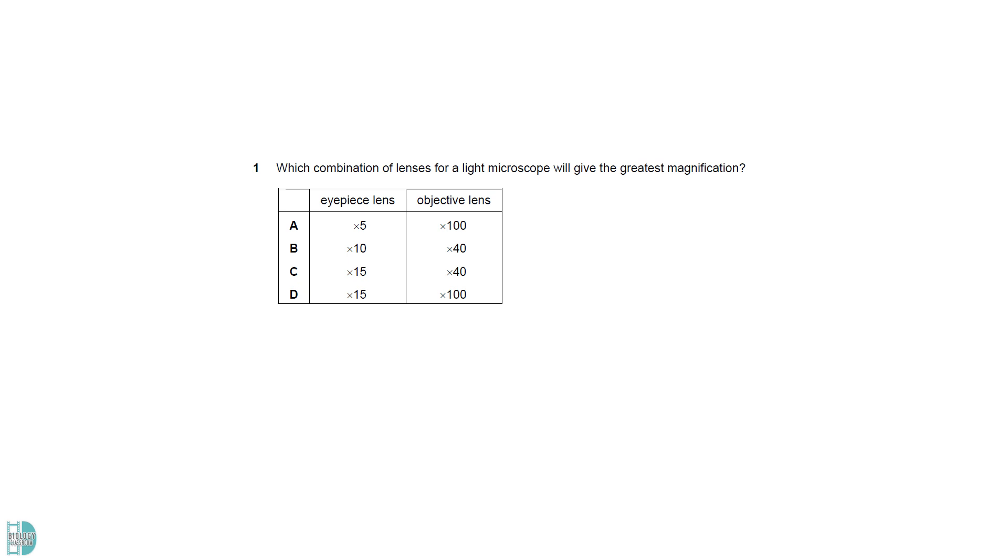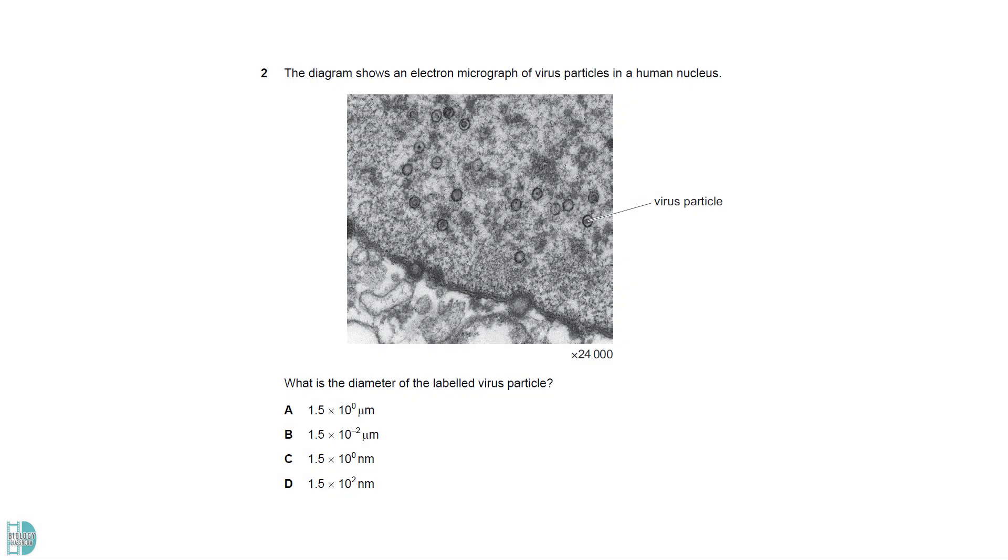The total magnification of a microscope is calculated by multiplying the magnifying power of the eyepiece and objective lenses. D gives the greatest value. The actual diameter is calculated by the image diameter divided by the magnification. You must measure the image size using a ruler, convert the measurement to micrometers or nanometers, and then do the division.